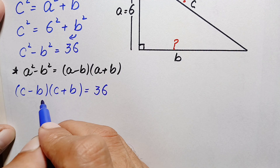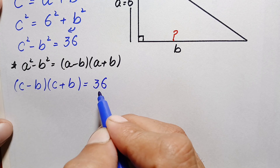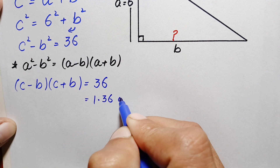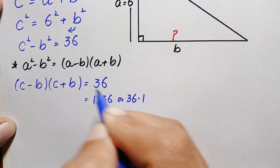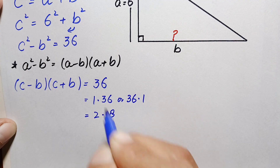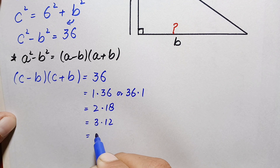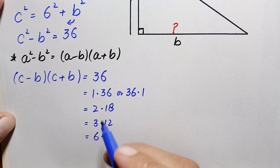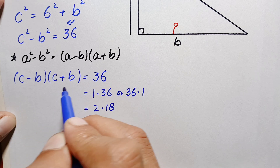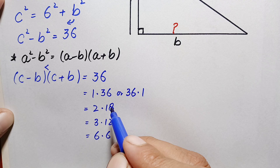On the left hand side there is a product of two expressions, so we need to factorize 36 and find all possible pairs of factors. We can write 36 as: 1 × 36, 2 × 18, 3 × 12, or 6 × 6. For any two numbers c and b, their difference is always smaller than their sum, so we take only those pairs where the first number is smaller than the second.